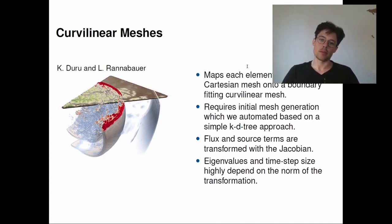So first the curvilinear mesh method. Here we map each single element from our computational Cartesian mesh onto a boundary-fitting curvilinear mesh. This requires initial mesh generation, which we automated for our field of applications with a simple KD tree approach. So this allows us to divide our computational domain in planes and then map each plane onto a fault system, for example, or a topography. For this we have to transform flux and source terms with the Jacobian. One big problem of this method is that the eigenvalues and with that the time step size highly depend on the norm of the transformation.